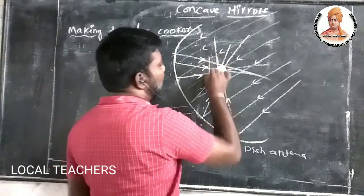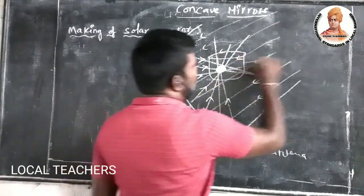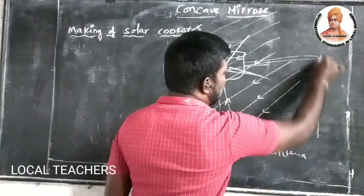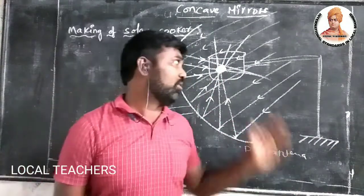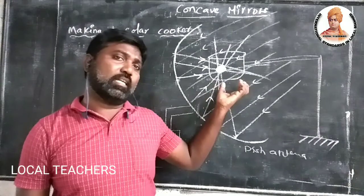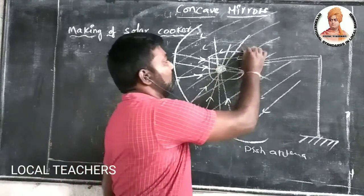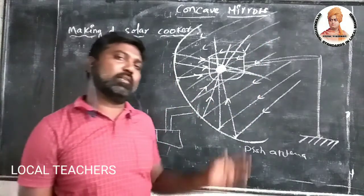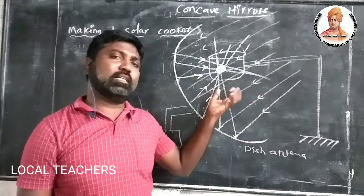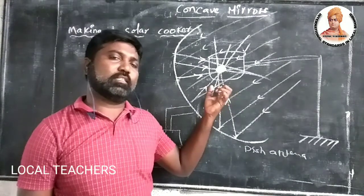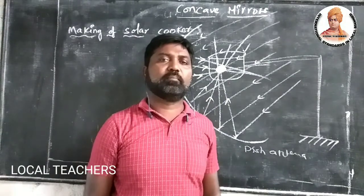By the help of a stand, if we place a vessel at this focus point, what happens is: due to the converging of reflected rays at the common point, it will heat the vessel. If you are putting water into that vessel, ultimately the water will boil after some time. Based on this principle, the solar rice cooker is prepared.